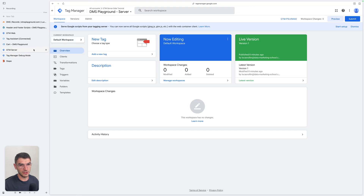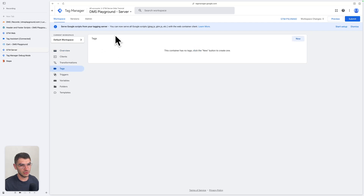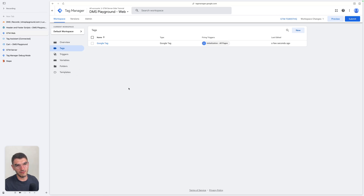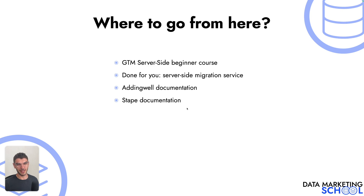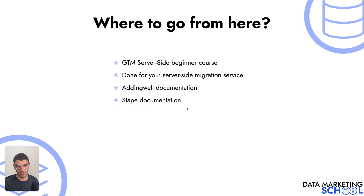All that's left to do is connect your different platforms and add tags inside your GTM server container. Also make sure that all the events of your tagging plan are actually sent to your server. Now that your tagging server is set up with either AddingWell or Stape, for next steps check the resources below. You will find a GTM server-side beginner course. I also provide done-for-you server-side migration services as a freelancer. You can also look at AddingWell documentation, Stape documentation, and get support from these hosting providers.